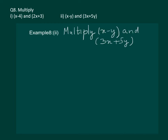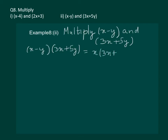Let us start with example 8, second part. We have to multiply (x minus y) with (3x plus 5y), and both of them are binomials. Distributing the first bracket, we get x multiplied by (3x plus 5y), minus y multiplied by (3x plus 5y).